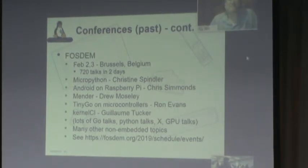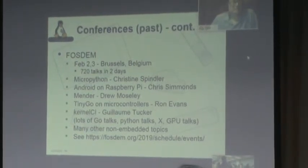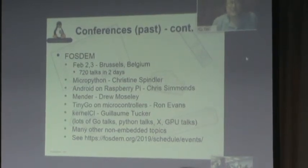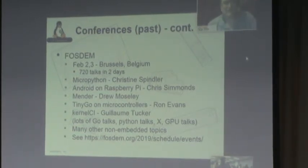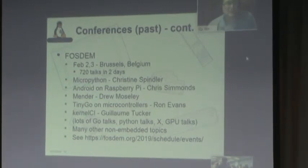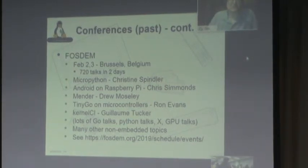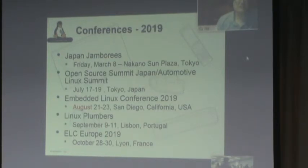I've never been to FOSDEM — I didn't realize what a huge event it is. They had 720 talks in two days, which is just huge. It looks like it was conducted at a university because they had a ton of rooms. Most of the tracks had a single topic with a room dedicated for it. With 720 talks, that's 360 per day probably divided into 36 rooms. The event is organized along topic boundaries, so I recommend going to look at some of these events and seeing if there's stuff that's interesting.